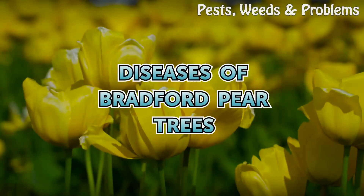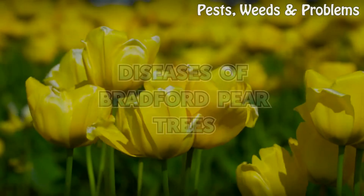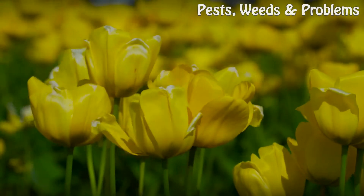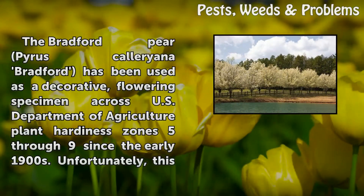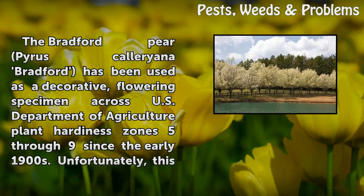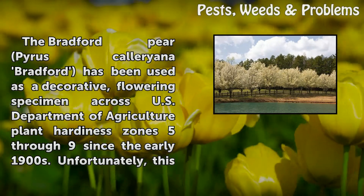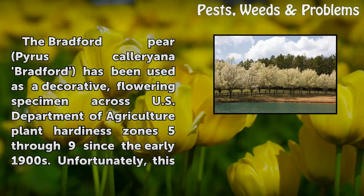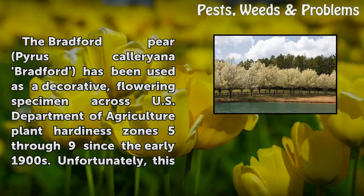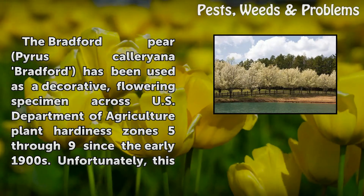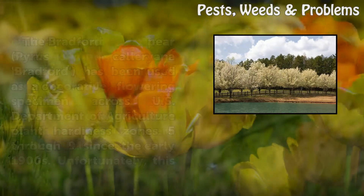Diseases of Bradford Pear Trees. The Bradford Pear, Pyrus calleryana Bradford, has been used as a decorative, flowering specimen across U.S. Department of Agriculture Plant Hardiness Zones 5 through 9 since the early 1900s.